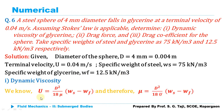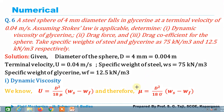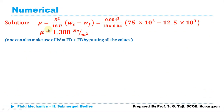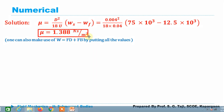To find dynamic viscosity, we use the terminal velocity equation: U = D²/(18μ) × (Ws − Wf). Rearranging for μ: μ = D²(Ws − Wf)/(18U). Putting in all values, μ comes out as 1.388 N·s/m². Alternatively, you can use the equilibrium condition W = FD + FB and solve for μ directly.